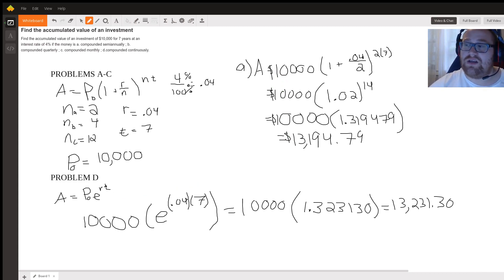For problem D, we have a different equation, and this is continuous compounding as opposed to divided throughout the year. So you have A, the final amount, equals the initial amount times the exponential function raised to the interest rate times time.